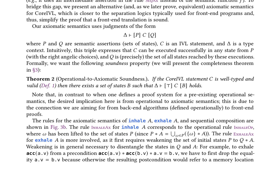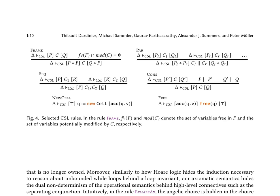The rules for the axiomatic semantics of inhale, exhale, and sequential composition are presented: the inhale rule corresponds to the operational rule and the exhale rule requires weakening of the initial states. This work aims to bridge the semantic gap between the operational IVL semantics and the front-end logic, facilitating the connection of back-end verifiers to front-end programs. The axiomatic semantics for core IVL abstracts over the low-level details of the operational semantics, such as the dual non-determinism inherent in the language.